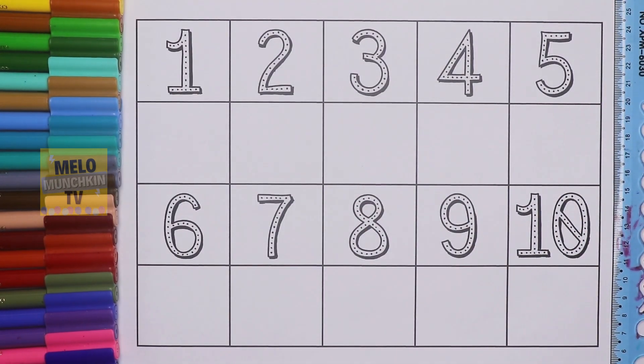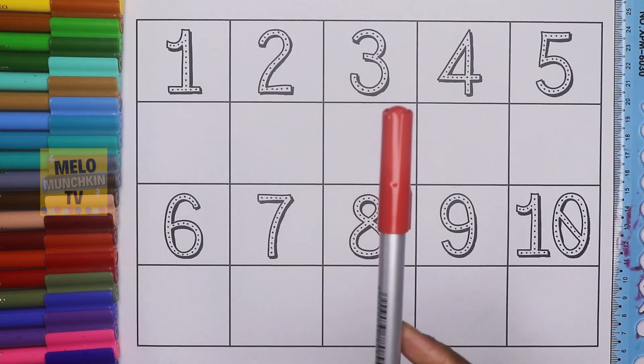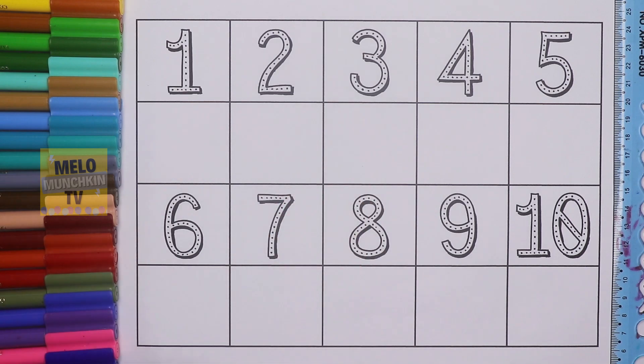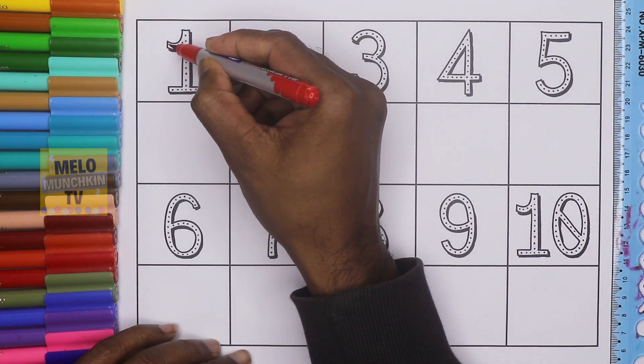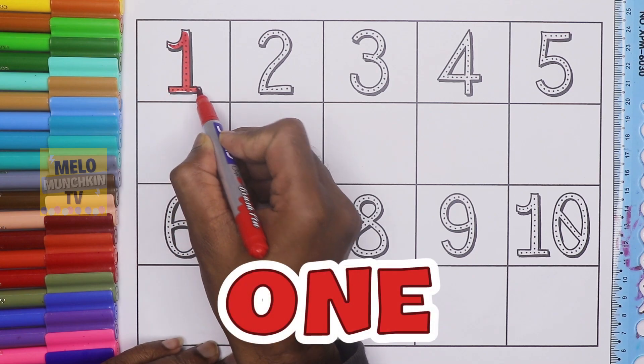Hello kids, today we will learn numbers and number names. Let's get started. I'll take red color and use it to write number one. This is number one: O-N-E, one.